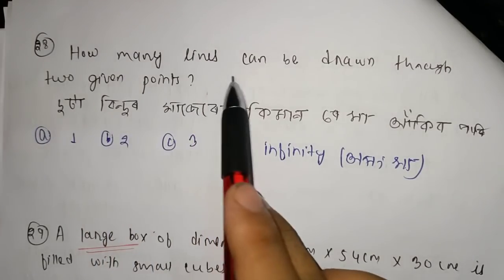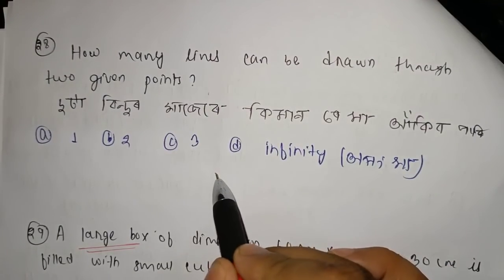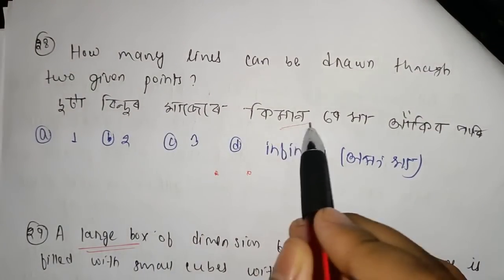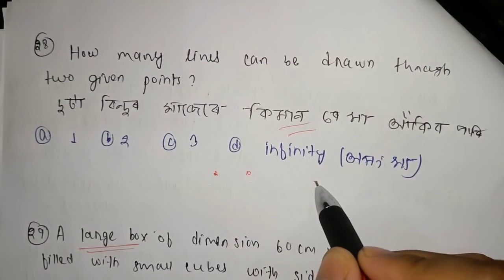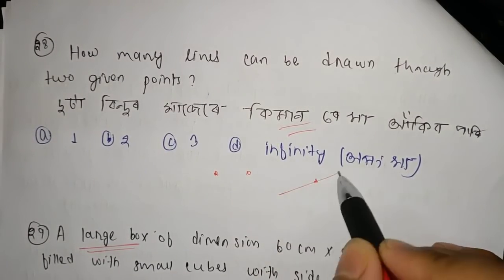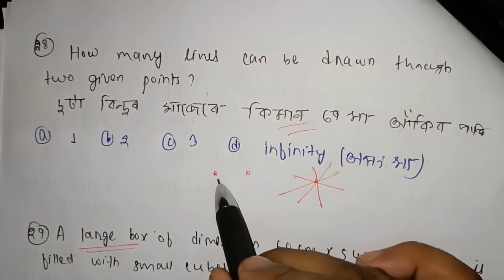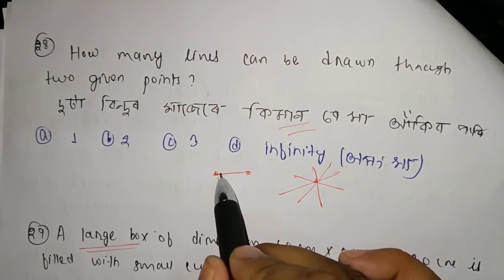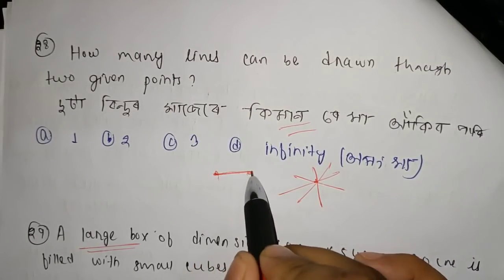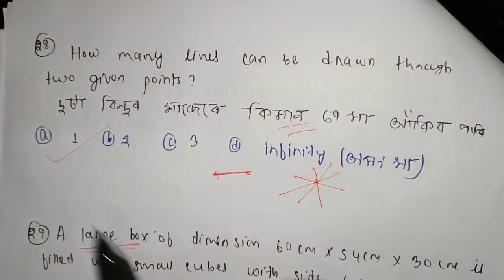How many lines can be drawn through 2 given points? The answer is 1 — only one unique straight line can pass through any two given points.